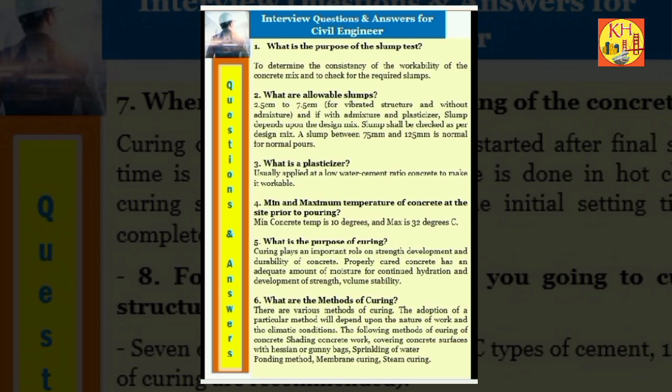Question 5: What is the purpose of curing? Curing plays an important role on strength development and durability of concrete. Properly cured concrete has an adequate amount of moisture for continued hydration and development of strength and volume stability. Question 6: What are the methods of curing? There are various methods of curing. The adoption of a particular method will depend upon the nature of work and the climatic conditions. The following methods of curing of concrete: shading concrete work, covering concrete surfaces with hessian or gunny bags, sprinkling of water, ponding method, membrane curing, steam curing.